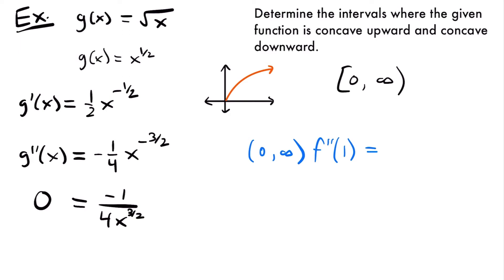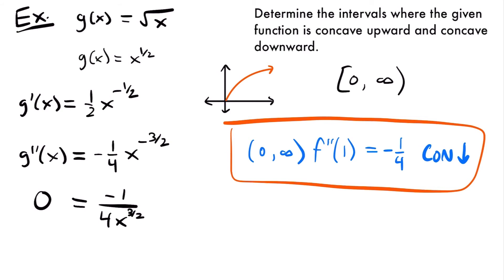So we are going to be concave down for this only interval of this function. You could also just look at the graph and see that it's concave down, because the slope of the function is constantly decreasing — it starts out pretty steep and then levels out as the function continues on. So for the square root of x, we have one interval, and for that interval our function is concave down.